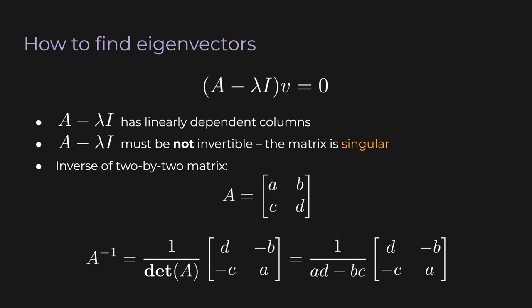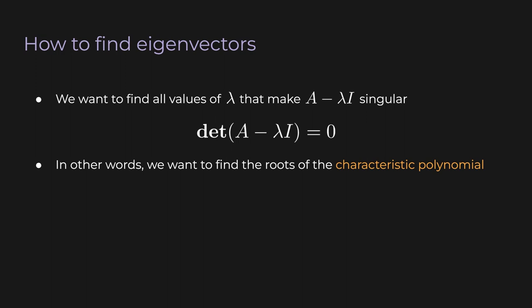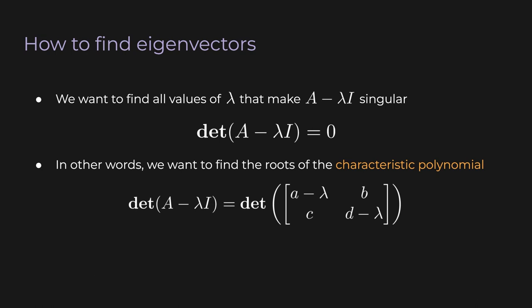But we don't care about the matrix A being singular — we care about A minus lambda I being singular. So all we need to do can be summarized by one statement: find all values of lambda that make the determinant of A minus lambda I equal zero. Those lambdas are the eigenvalues. This determinant is called the characteristic polynomial of A. We see that lambda I is just a diagonal matrix with lambda along the diagonal. We subtract this from A and apply the formula for the determinant to get an expression we want equal to zero.